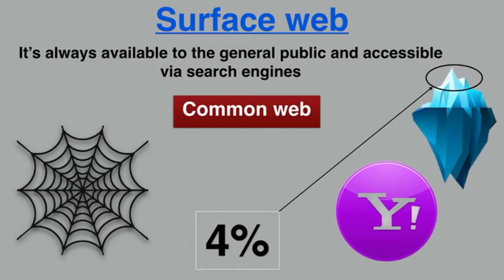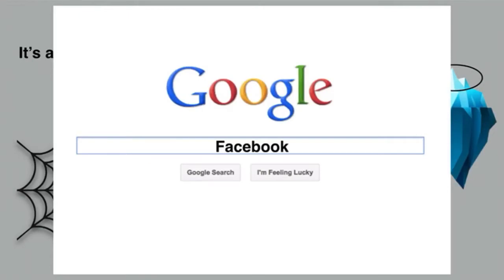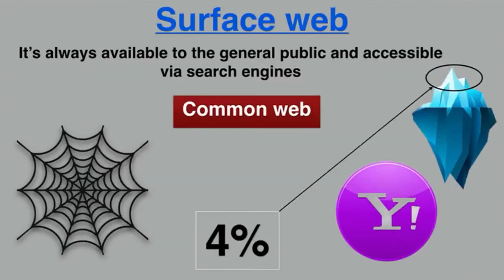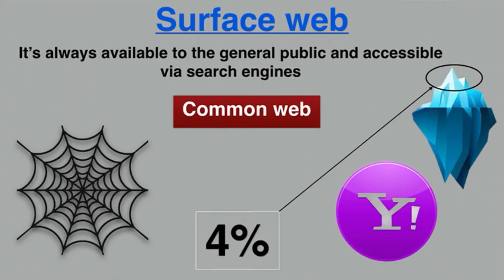The remaining 96% belongs to the deep web and dark web. Data available on the surface web is intentionally indexed by search engines, which means it is registered or listed on search engines. This is the reason you can access it easily compared to data on the deep web or dark web. Anything found through a web browser using any search engine comes under the surface web. This is also the area of the web that is under constant surveillance by governments across the world.